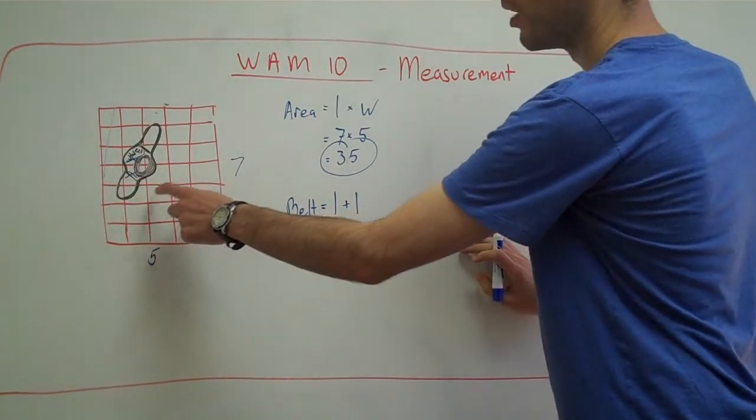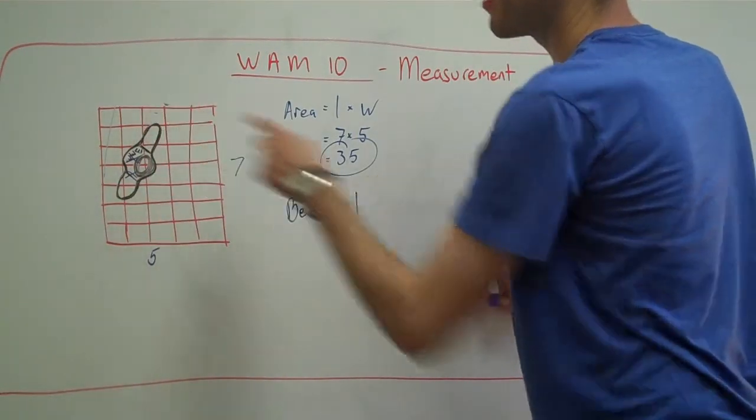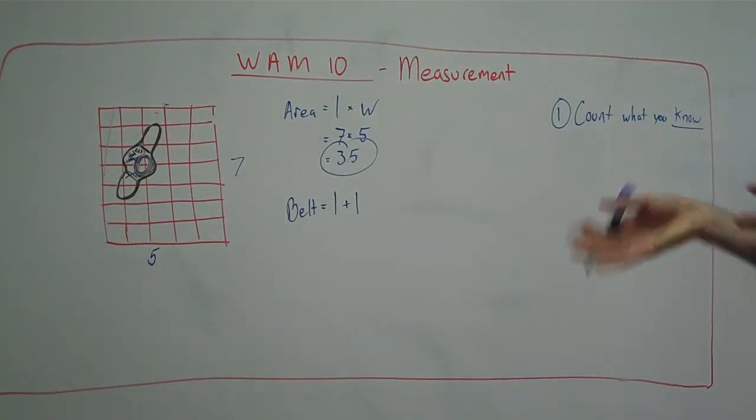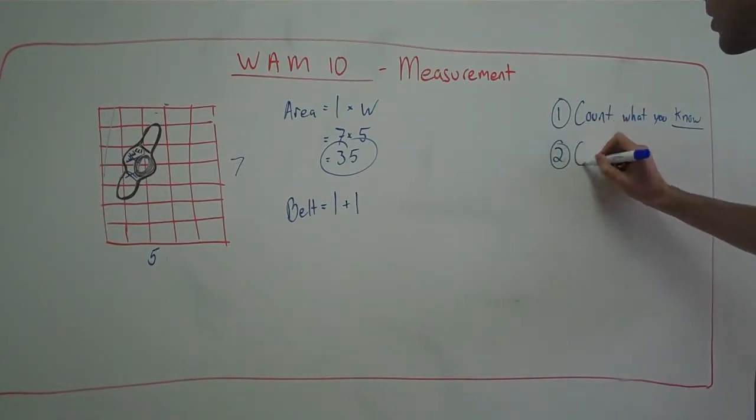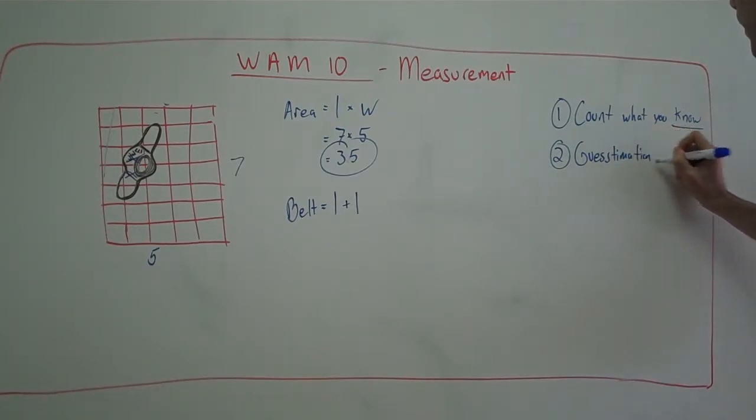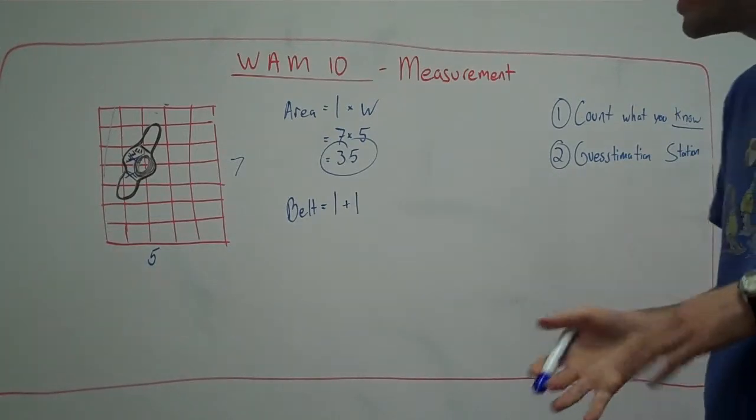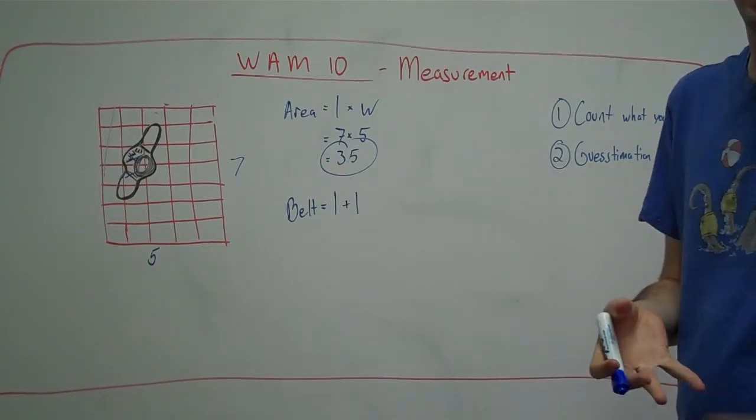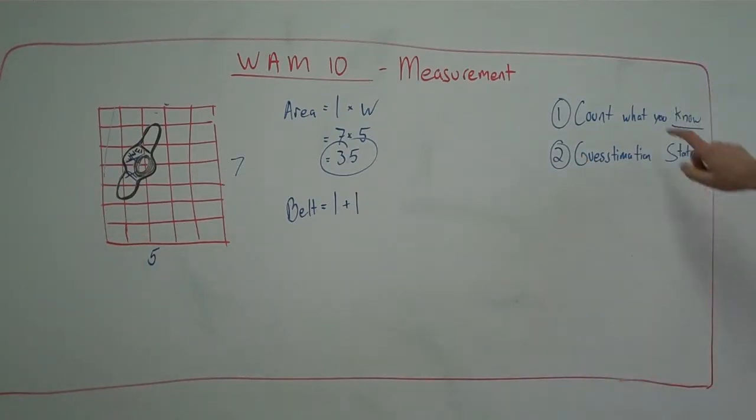We've crossed out two squares, but there's several squares left. There's one, two, three, four, five, maybe six, and maybe seven squares left that have partial bits of the belt in it, but we don't really know how much. So, with those seven squares, what we do is we do something that I like to call guesstimation station. This is just a fun term. It's just a fun term that means we're going to guess what we kind of can as best we can, and if we don't quite get it right, that's okay because we've already counted what we know.